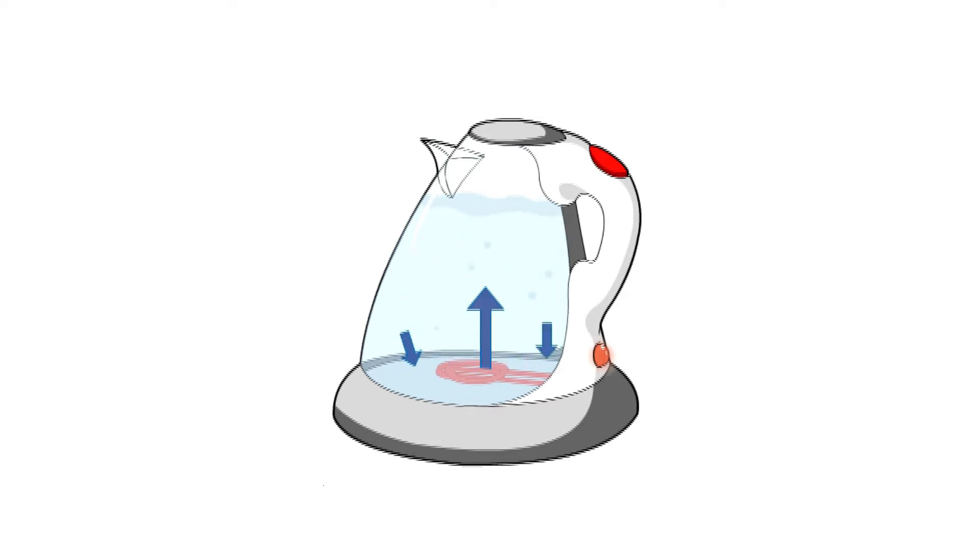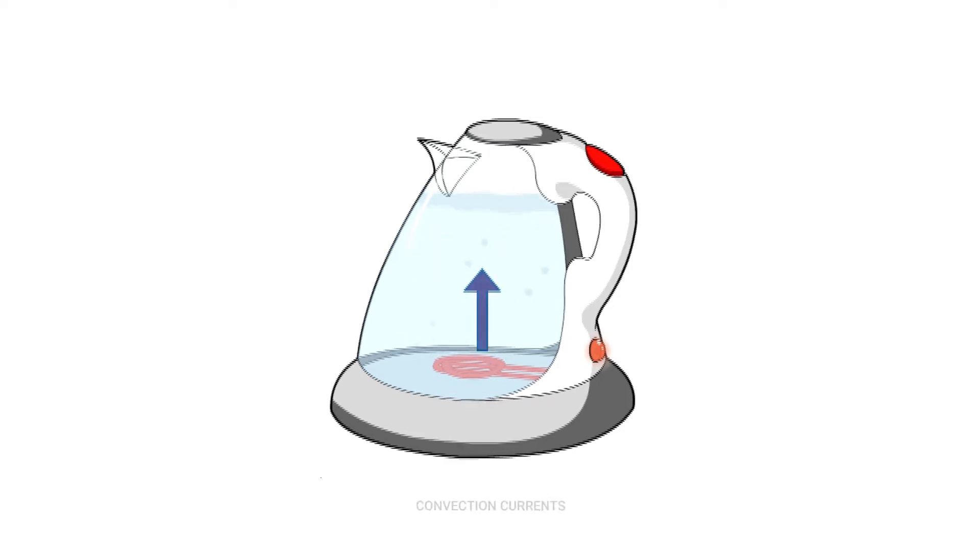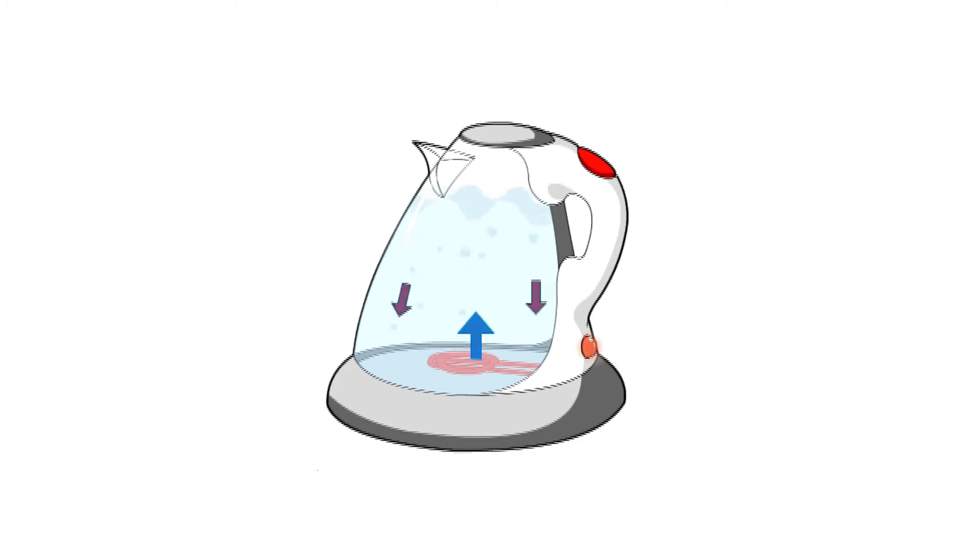This creates circular movements known as convection currents. These are flowing fluids that are moving because there is a temperature or density difference within the material. The convection currents continue to circulate, transferring heat energy to all parts of the kettle.